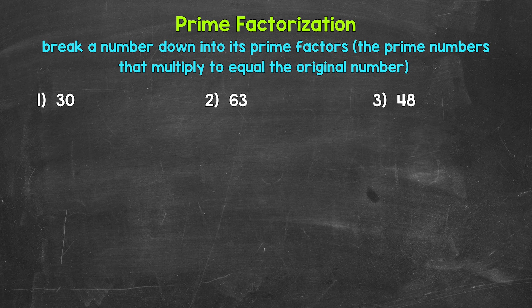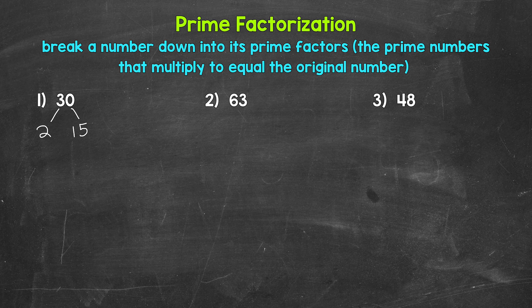Two and 15 are factors of 30; two times 15 equals 30. So let's break this down into two and 15. Now you may be thinking five times six equals 30 as well — could we have done that? Absolutely, that works too. Depending on the number we are working with, there can be different paths we can take, and it does not matter which side each factor is on — we will get the same prime numbers either way. Now two is a prime number; the only factors are one and two. So two cannot be broken down anymore. We are done with that branch.